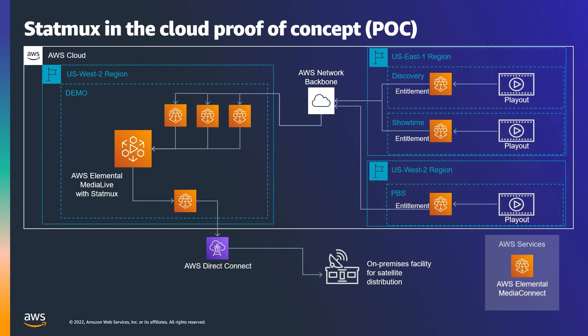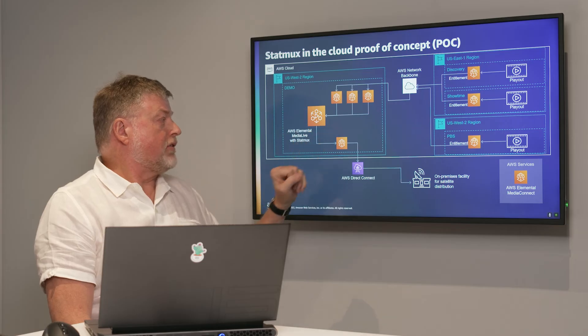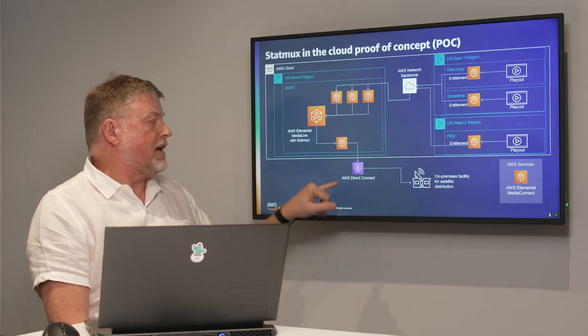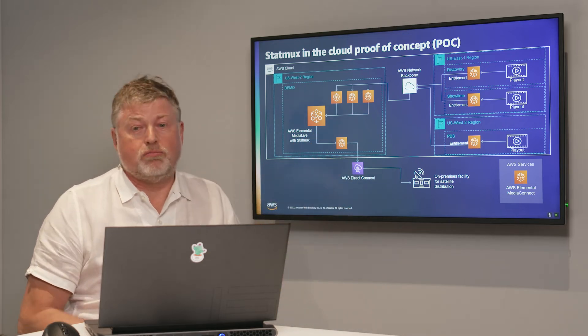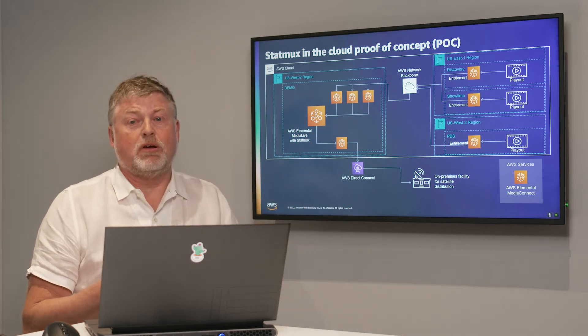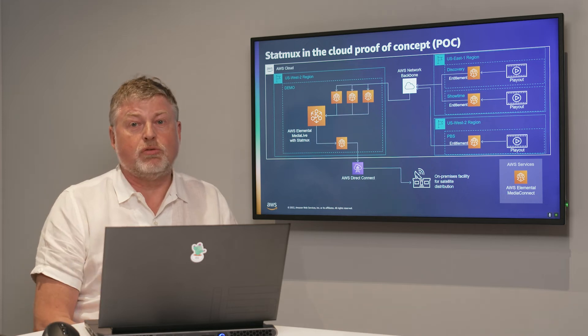We then feed that into Media Live, which is our cloud-based encoder. For this use case, we're using a feature in Media Live that allows you to do a closed-loop statistical multiplexing system, creating these 14 channels into a multiplex at 39 megabits per second, which we feed back to the ground using Media Connect and a direct connect, enabling us to send this reliably to the ground.